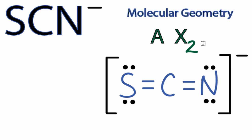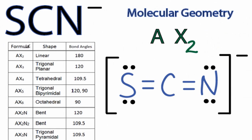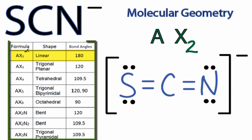You could have memorized that AX2 is a linear molecule, or look it up on a table. Looking down the table, AX2 is the first entry — it is linear, with a bond angle of 180 degrees.